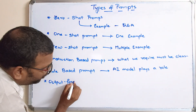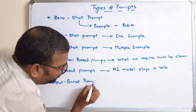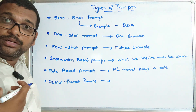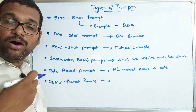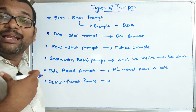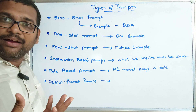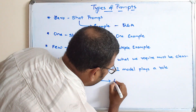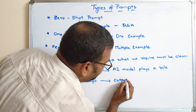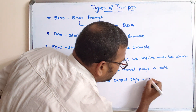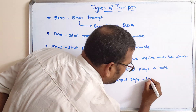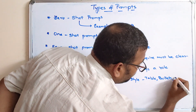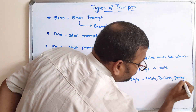Next is the output format prompt. This defines how we require the output — for example in a table, in points, in bullets, or in a paragraph. It gives the output style, such as table, bullets, paragraph, etc.